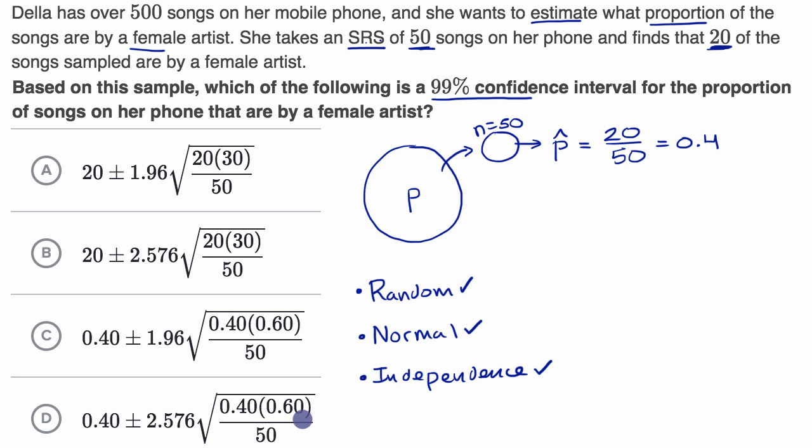Let's think about what the confidence interval is going to be. It's going to be her sample proportion plus or minus a critical value, and this critical value is dictated by our confidence level, times the standard error of the sample proportion. In this case, it would be p hat times one minus p hat, all of that over n, our sample size, all of that over 50.